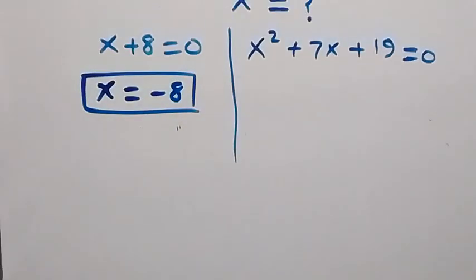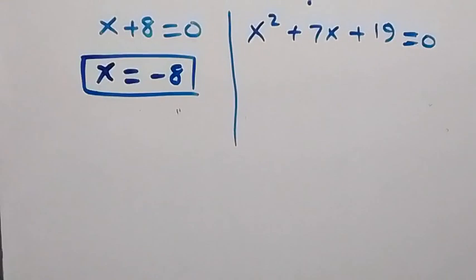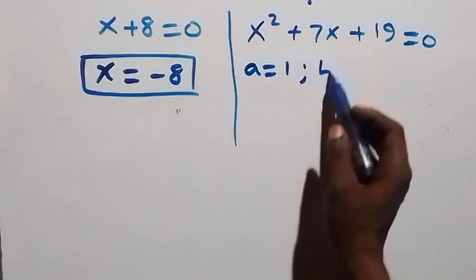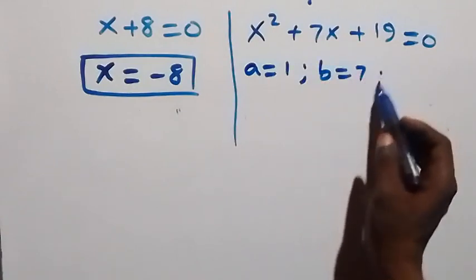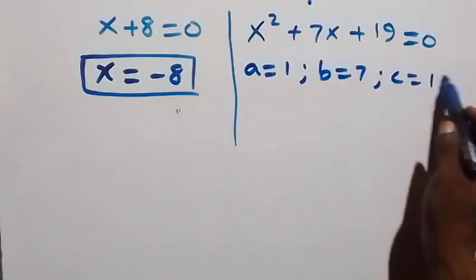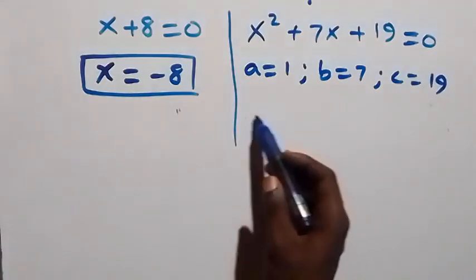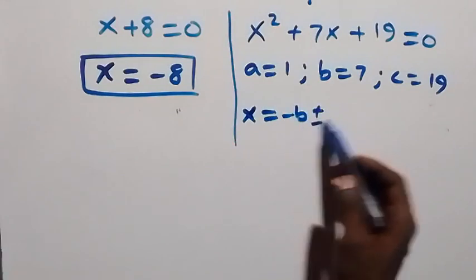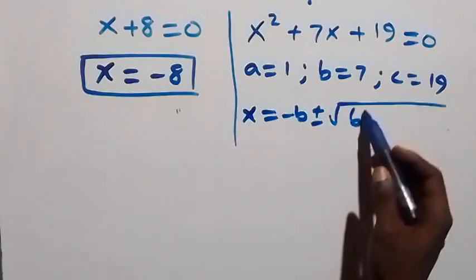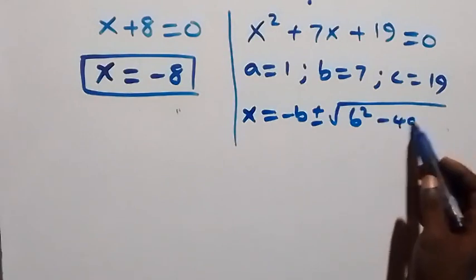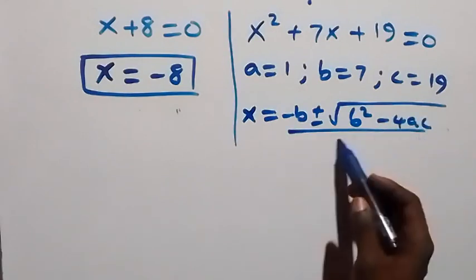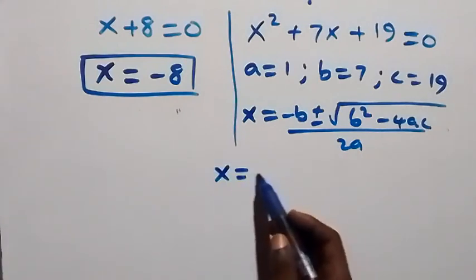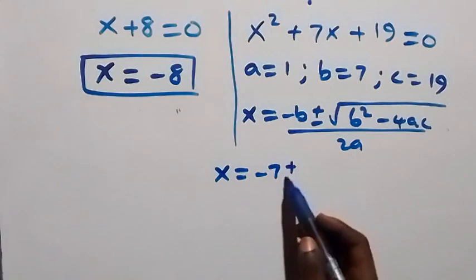For the quadratic x squared plus 7x plus 19 equals 0, we use the quadratic formula where a equals 1, b equals 7, and c equals 19. Applying the formula: x equals minus b plus or minus square root of b squared minus 4ac, over 2a. This gives x equals minus 7 plus or minus square root of b squared minus 4ac, over 2.